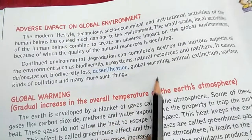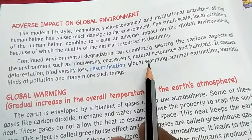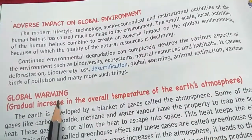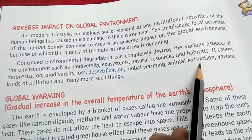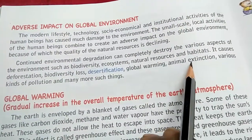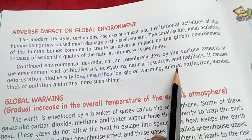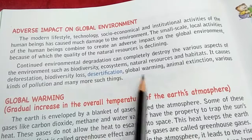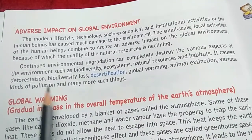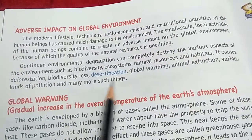Global warming: the global temperature is increasing day by day and the earth is becoming warmer — we will study global warming in detail later. Animal extinction: many animals and many birds have become extinct, and no more species are left because of all these reasons. Various kinds of pollution: land pollution, water pollution, soil pollution, air pollution, and many more.